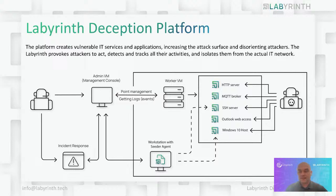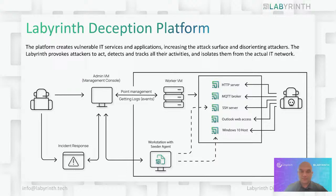The platform is very easy — we made a lot of effort to make it as easy as possible for deployment. We have two virtual appliances mandatory for the whole platform: one called Admin VM — the management console — and the second called Worker VM, on which we automate deployment of points. Points, in other words, are the honeypots or decoys that play the key role in the network monitoring approach. We support VMware, Microsoft Hyper-V, Proxmox, and Microsoft Azure cloud deployment, with Google Cloud and AWS on the roadmap.